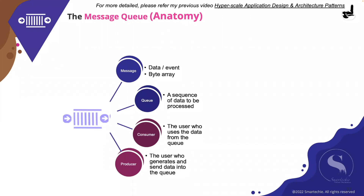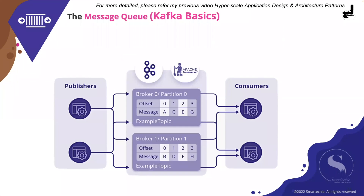Message queues improve performance by enabling asynchronous communication, ensuring that every system component is never idle or waiting for a response. Message queues increase scalability as system components are decoupled and can be independently scaled. The message queue architecture is made up of producers, consumers, and brokers. The producer acts as a client application that creates and sends messages into the queue, while the consumer is the service that receives and processes messages from the queue.